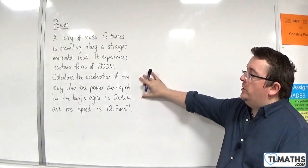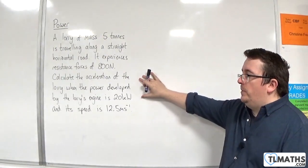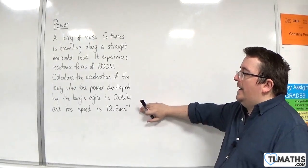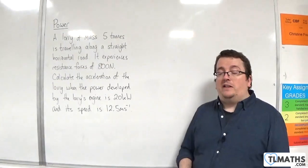Calculate the acceleration of the lorry when the power developed by the lorry's engine is 20 kilowatts and its speed is 12.5 metres per second.